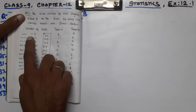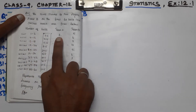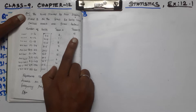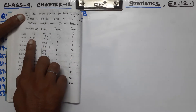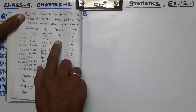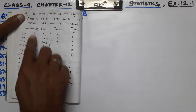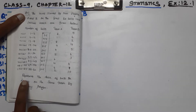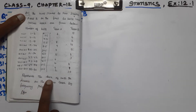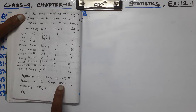Number of balls faced: 1 to 6 balls — Team A has 2 runs, Team B has 5 runs. Next is 7 to 12 — Team A has 1 run, Team B has 6 runs. We are going to talk about how to represent the data of both teams on the same graph by frequency polygon.